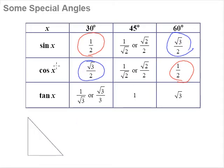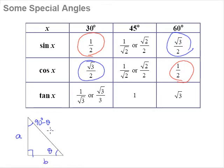The easiest way to illustrate the close relationship between sine and cosine is to look at what goes on in a right-angle triangle. Here we have a right-angle triangle, and let's say this angle is called theta. If this angle is theta, then the other angle will be 90 degrees minus theta, because the angles in a triangle sum to 180 degrees. Let's call the sides A, B, and hypotenuse C. Sine theta equals the opposite over hypotenuse, which is A over C.